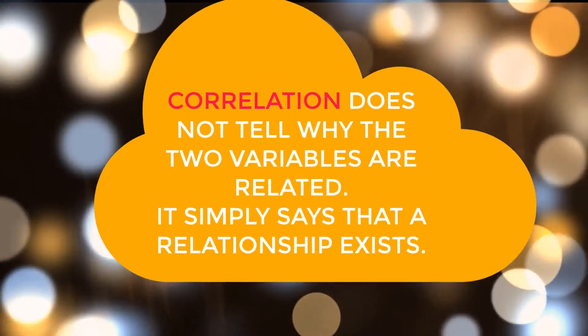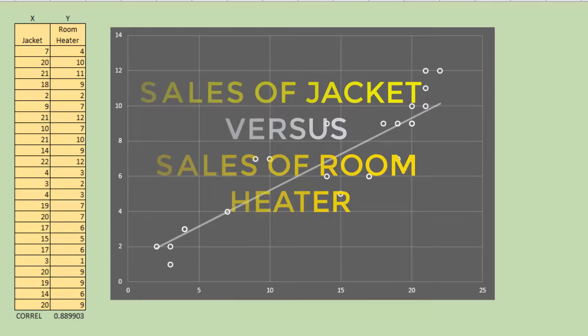Correlation does not tell us why and how the two variables are related. It simply says that a relationship exists. For example, correlation between sales of jacket and sales of room heater.